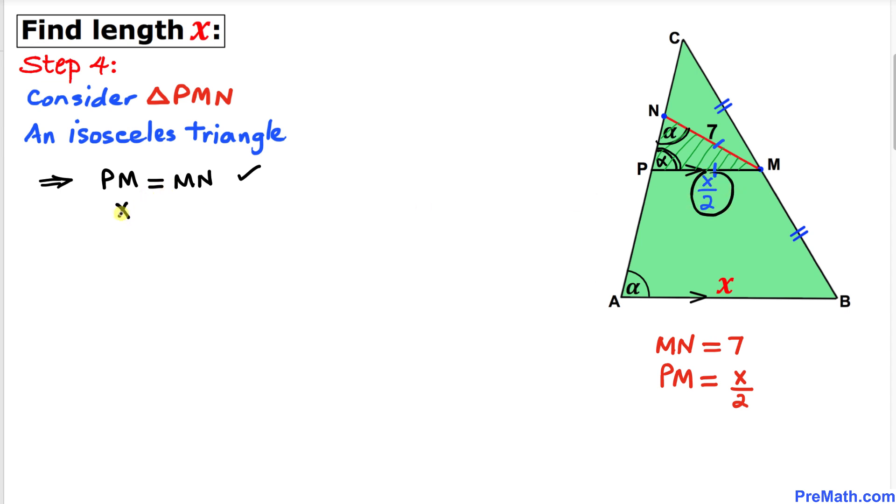In our case, PM is x over 2, so I'm going to replace it: x over 2 equals MN, which in our case is 7. Now let's isolate x by multiplying by 2 on both sides.